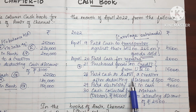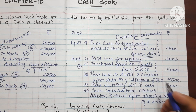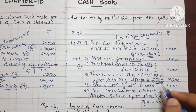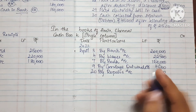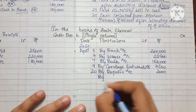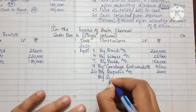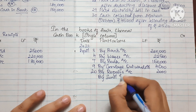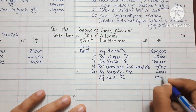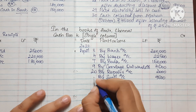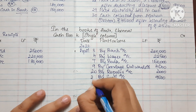The next transaction is: paid cash to a creditor after deducting a discount of Rs. 500. We can enter the discount amount in the cash book. The amount paid is Rs. 9,500. The date is the 28th.